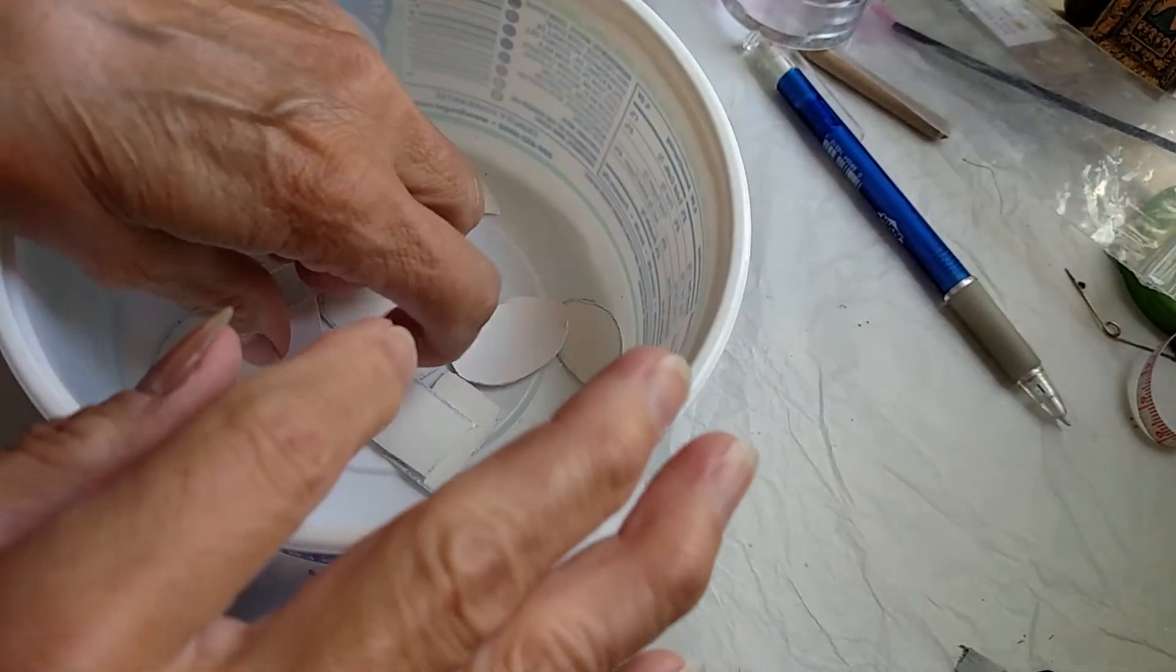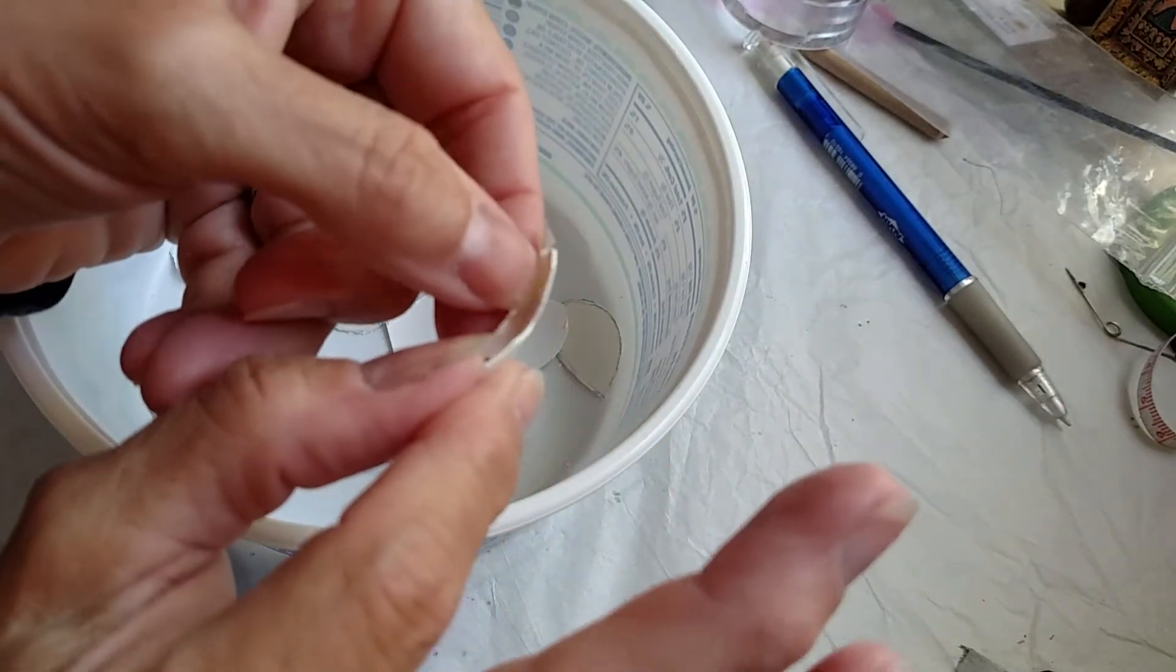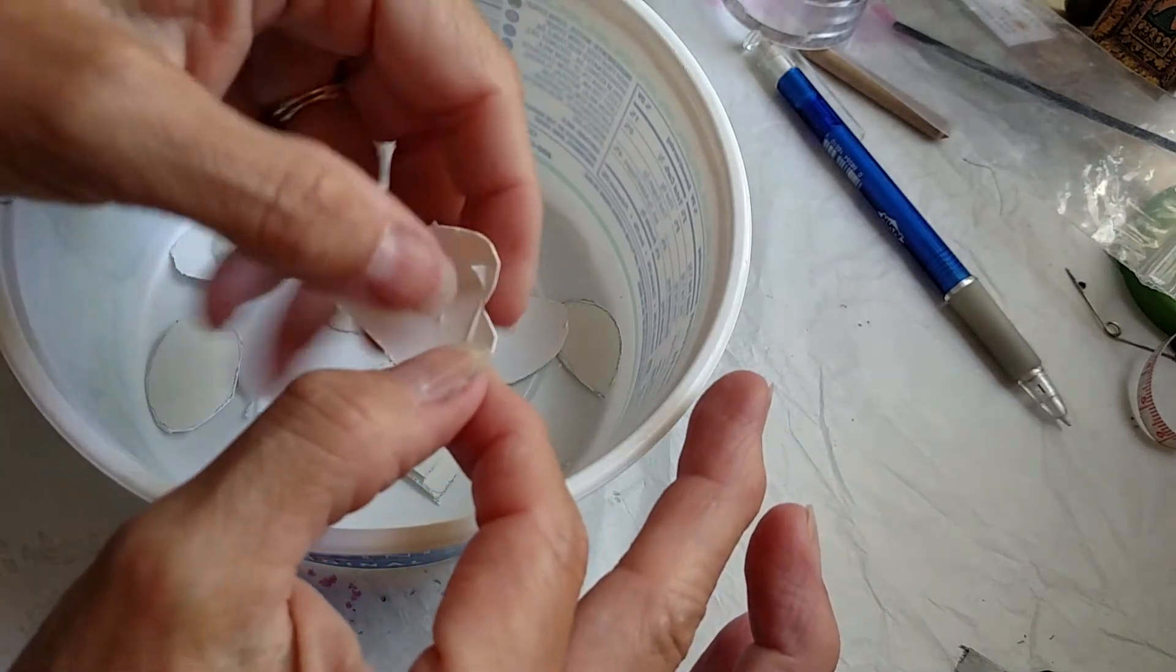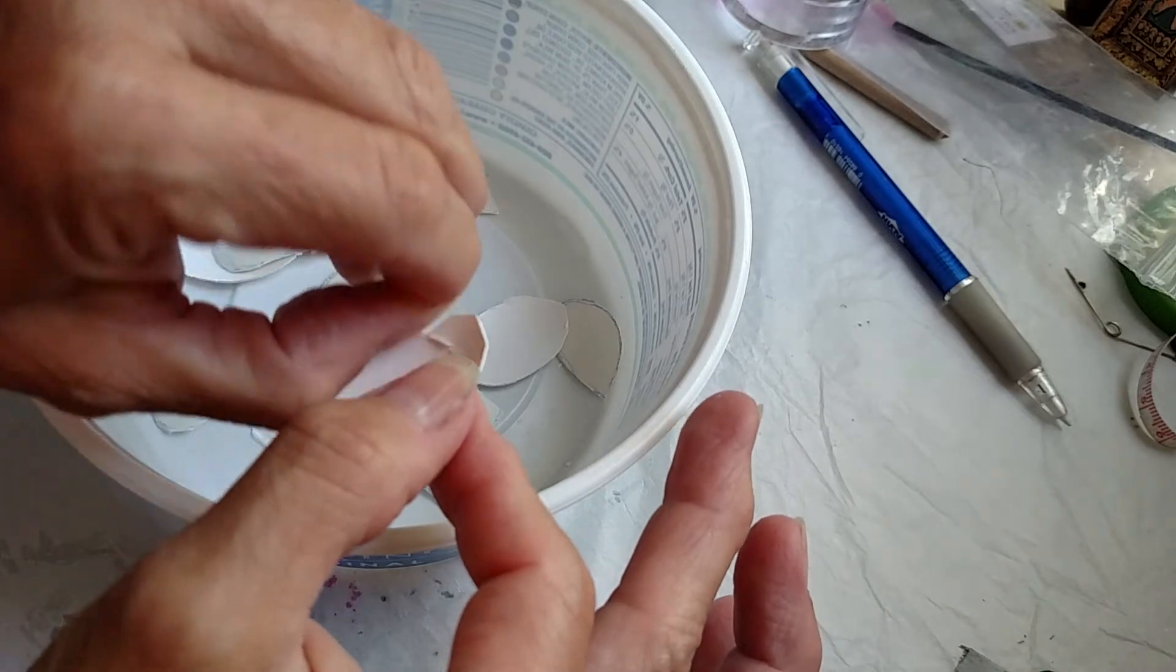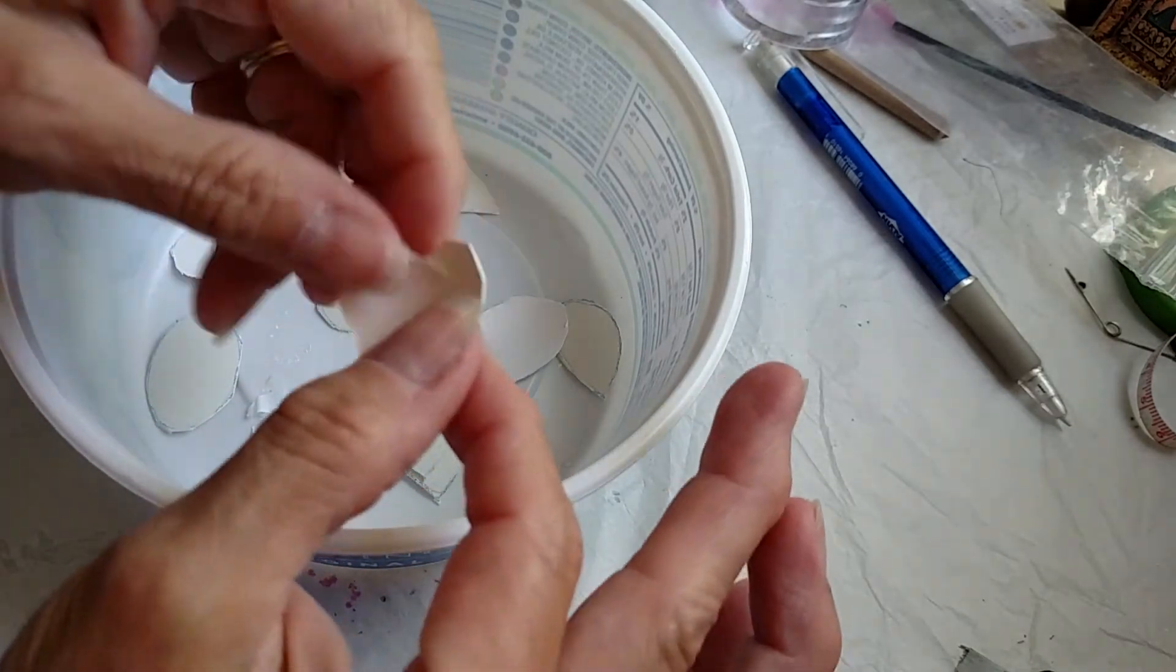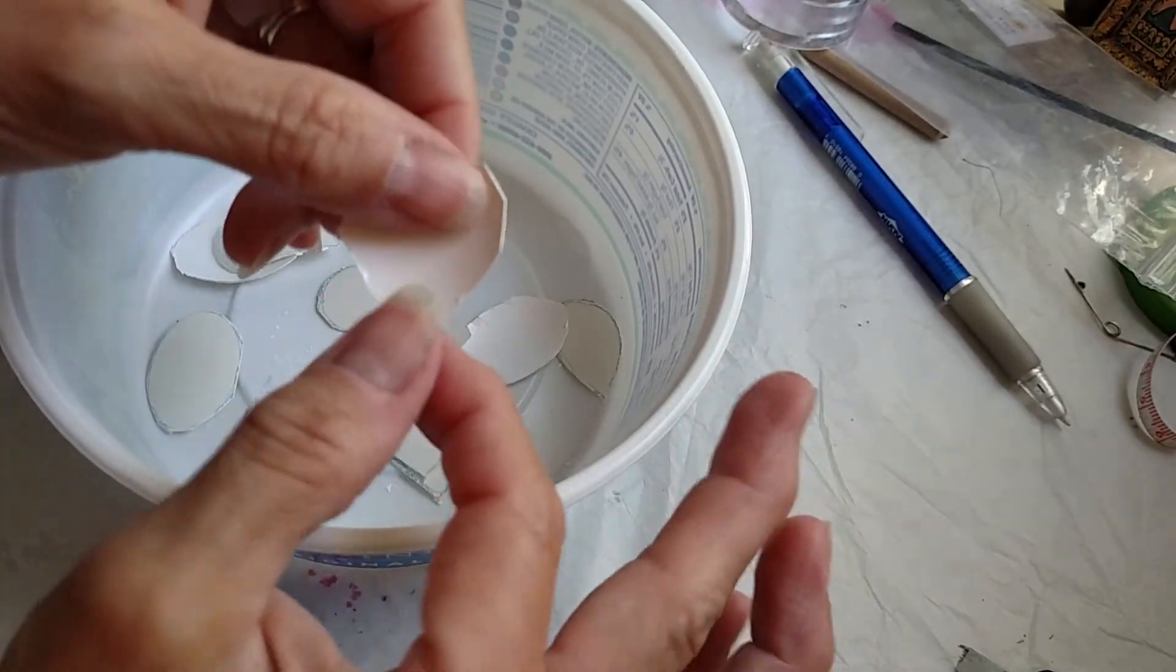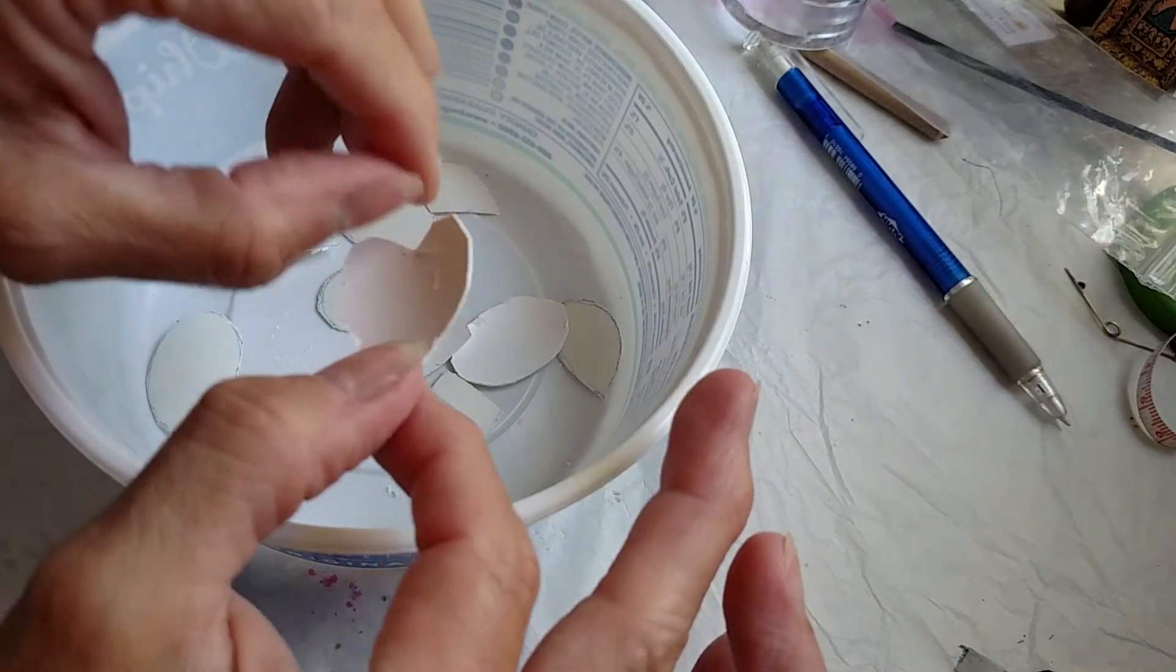So now my next step, I do need to kind of clean those up and get the membrane off the back. Because one of the cool things I'm going to try, because I have cut these out before I did the Pysanky on them, I'm gonna see if I can do Pysanky on both sides. At a minimum the back will be a solid color, but I might try to do some Pysanky and I think that might be cool.